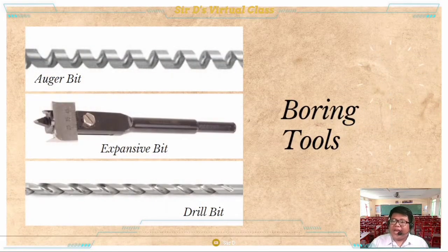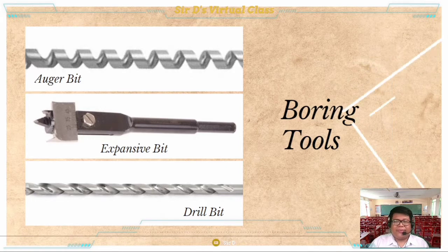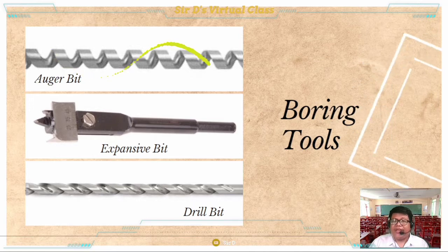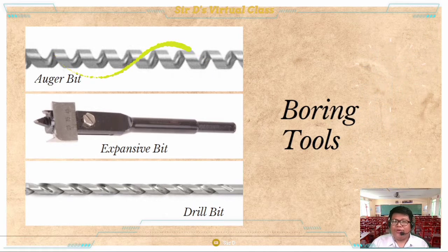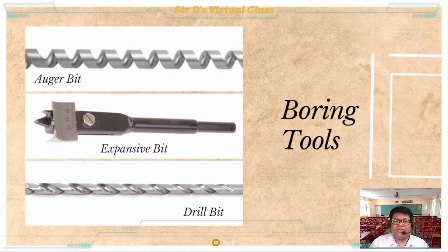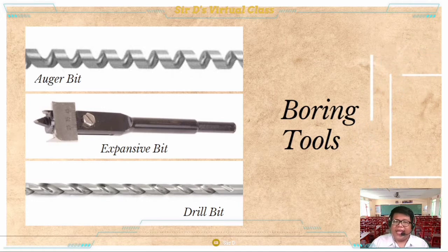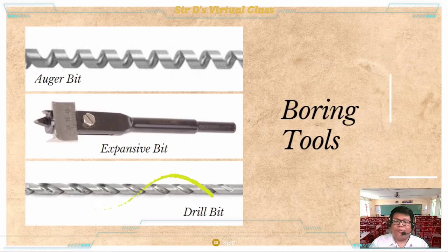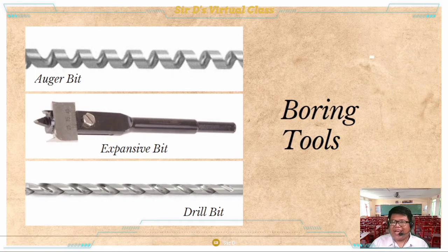Here we have the boring tools, which includes three tools. The auger bit is used to make holes in wood. The expansive bit is used to drill holes of various sizes in wood. And lastly, the drill bit is used for boring holes in metals, wood, and even plastic.